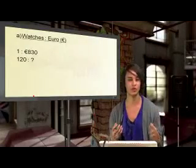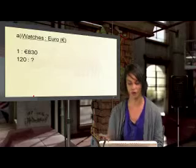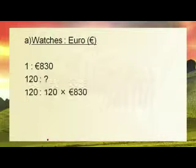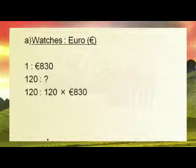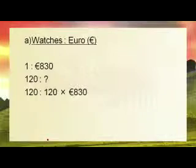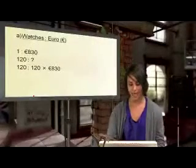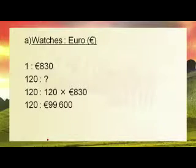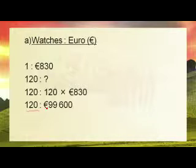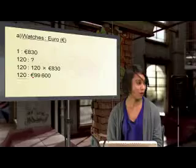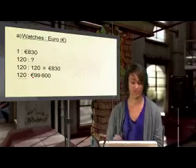We know that one watch is 830 euros. We multiply by 120, which is what we want to work out. So 120 watches gives us 99,600 euros as the cost of 120 watches.